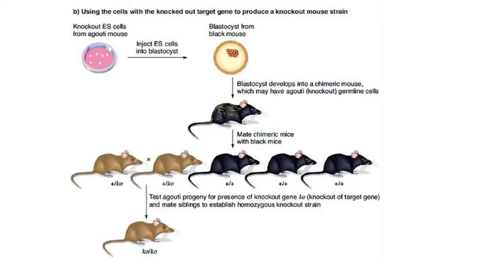In the development of a knockout mouse, knockout embryonic stem cells are injected into blastocysts. The resulting animal develops into a chimeric mouse, which is then mated with black mice, resulting in knockout mice.